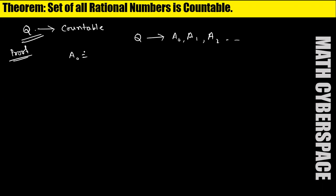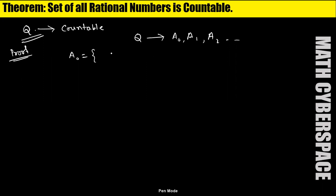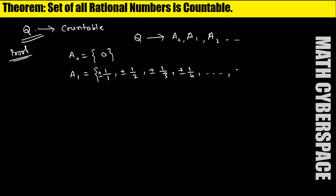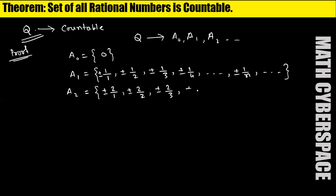A0 contains the element 0 — we can write it as 0/1, 0/2, 0/3, and so on, but all these mean only one element: 0. So I am taking only 0. The second set is A1, which equals ±1/1, ±1/2, ±1/3, ±1/4, and so on up to ±1/n. A2 equals ±2/1, ±2/2, and so on up to ±2/n.